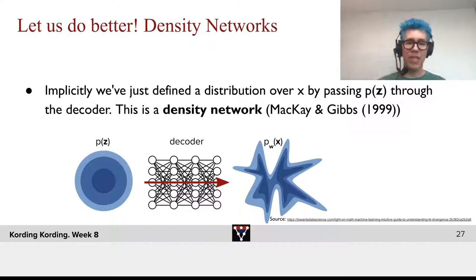So, what's the idea here? Implicitly, we've defined a probability distribution over x by passing a probability distribution over z through the decoder. This is a density network. McKay and Gibbs have been doing these things in the 1990s.